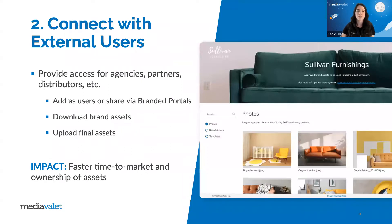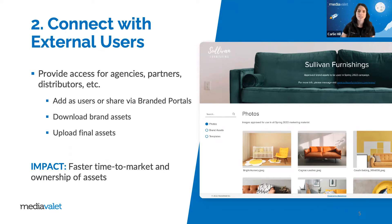Another area that's sometimes left untapped is connecting your external users with the DAM, and there are two main approaches. First is using something like a branded portal and creating a specific portal for each agency or partner, populated with the assets for their specific campaign. This ensures that external users can access and download the assets they need without needing to request them over and over again. Media Valet recently released a category syncing feature with our branded portal, so it will auto-update as you add or update assets within a specific category.